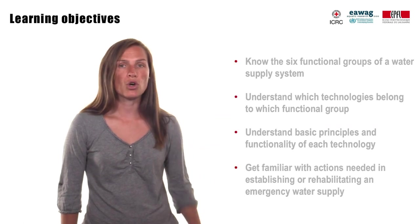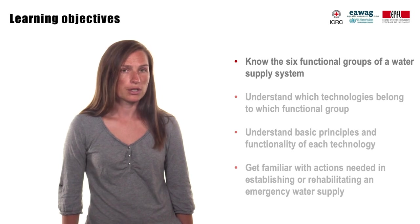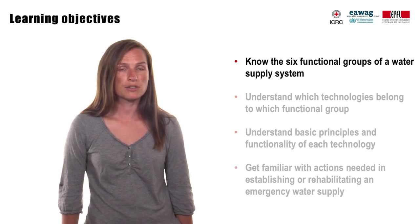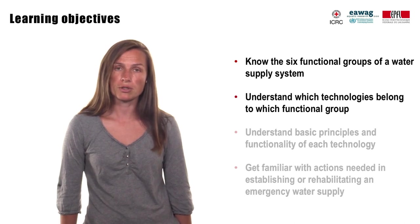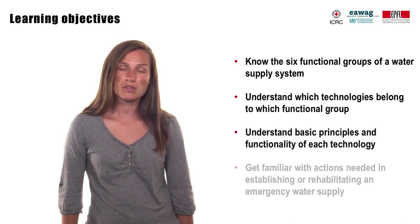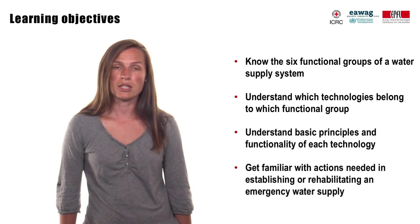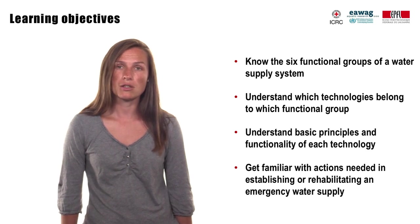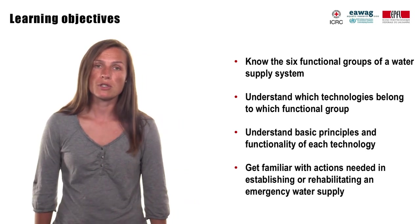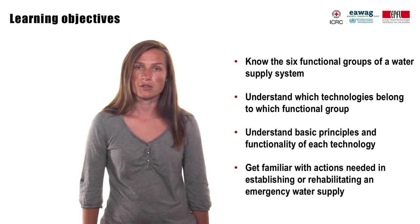Let's have a look at the learning objectives of week three of the course. Those are: to learn the six functional groups of a water supply system, understand which technologies belong to which functional group, understand basic principles and functionality of each technology, and finally, in order to be able to define strategy and emergency response, we will discuss immediate and long-term actions for the development or rehabilitation of a water supply system in an emergency context.